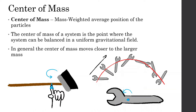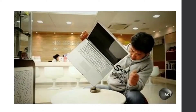Another thing to know is that the center of mass — let's say for a donut — can be where there's no object. So this would be the center of mass, but there's no part of the mass there. The center of mass is still in this hollow area.